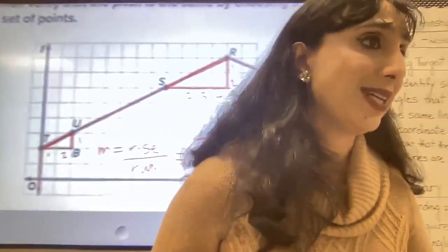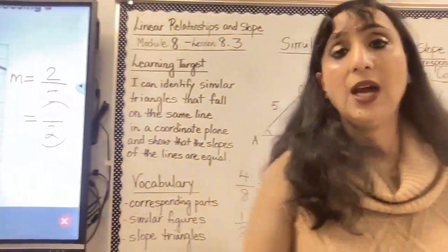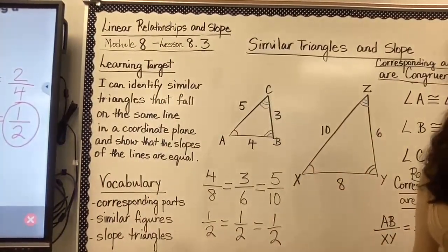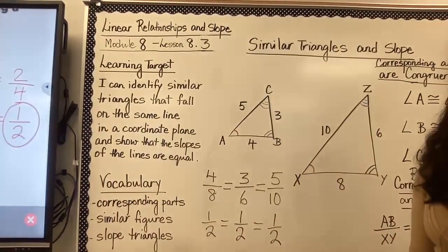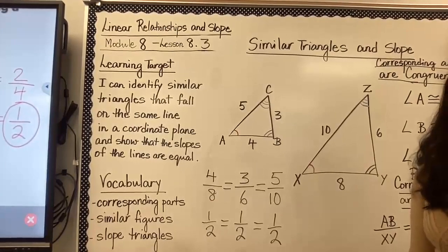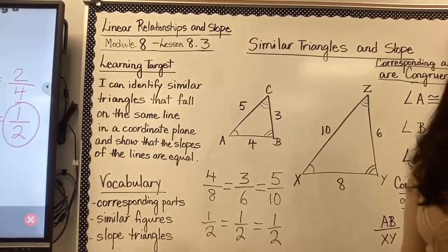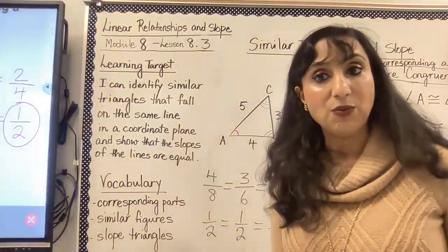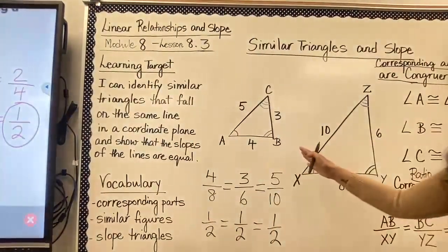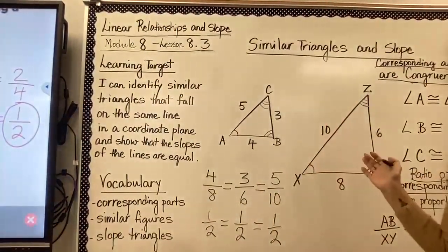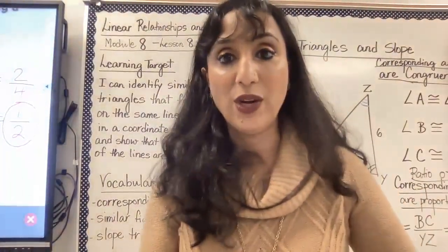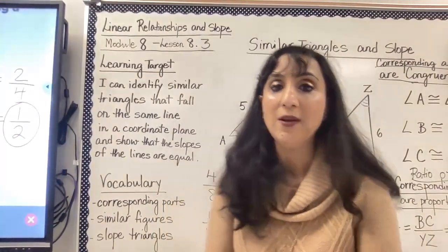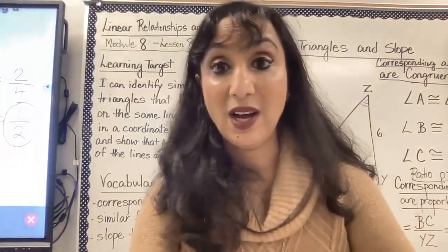This entire lesson is about similar triangles and slopes. When figures have the same shape but not the same size, they are called similar figures. If they are similar, their corresponding angles are congruent and the ratios of their corresponding sides are proportional. That concludes lesson 8.3 on similar triangles and slope.